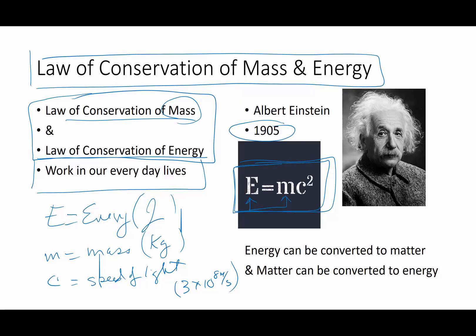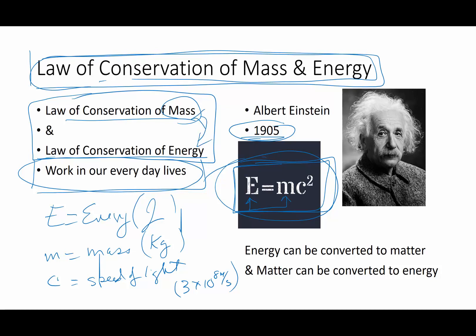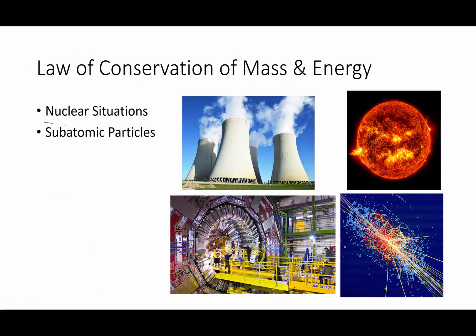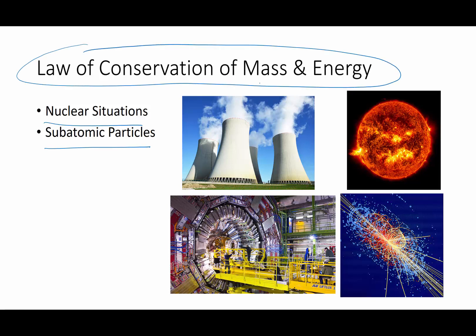In our everyday life we don't have to worry about E equals mc squared, and that's why it wasn't until over 100 years ago that we found it. But I would be fibbing if I did not mention the law of conservation of mass and energy. Since both conservation laws work, and Einstein said you can transform one into the other, when you get into extreme situations — like nuclear situations and subatomic particles — then you have to deal with the law of conservation of mass and energy. Mass can be converted into energy, and energy can be converted back into mass.